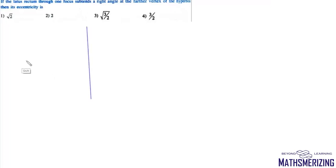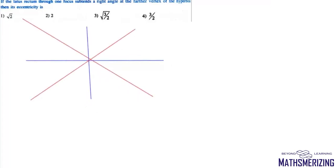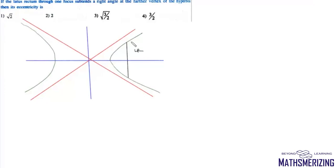The question is: if the latus rectum through one focus subtends a right angle at the farther vertex of a hyperbola, find its eccentricity. We have this hyperbola and one latus rectum. The endpoints of the latus rectum are (ae, b²/a) and (ae, -b²/a), and the farther vertex is (-a, 0).